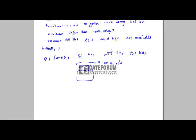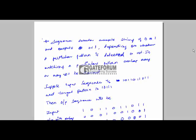A sequence detector accepts a string of zeros or ones and outputs zero or one depending on whether a particular pattern is detected. In matching a pattern, overlap may or may not be allowed. Suppose the input pattern is given and the target pattern is 1011.